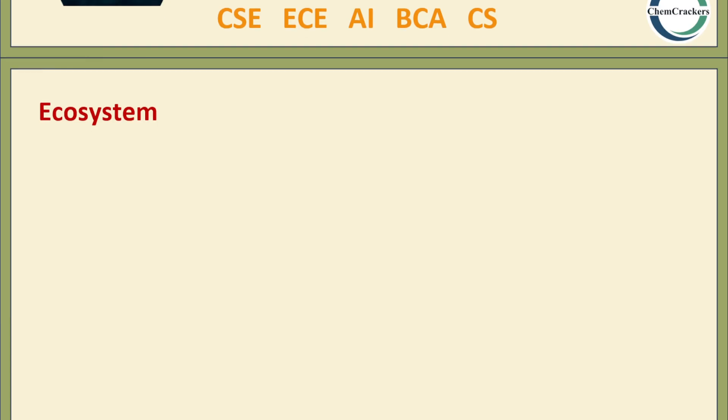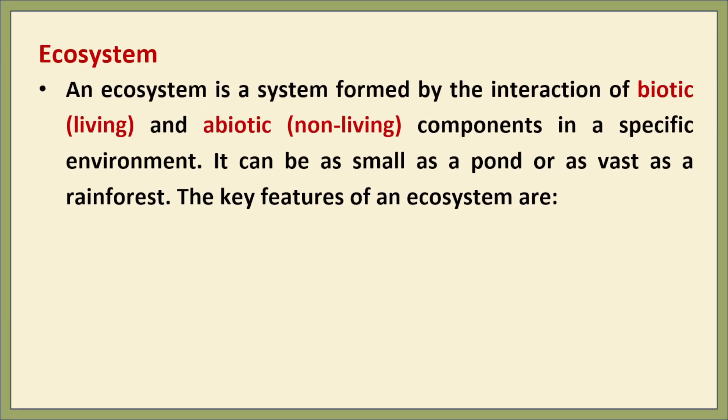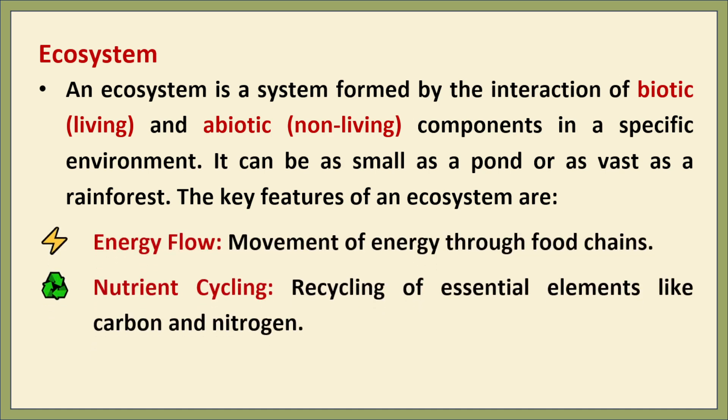Let us begin with the definition of an ecosystem. An ecosystem is a system formed by the interaction of living and non-living components in a specific environment. It can be as small as a pond or as large as a rainforest. The key characteristics of an ecosystem are the flow of energy and the cycling of nutrients, which help sustain life and maintain ecological balance.